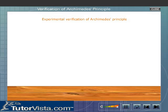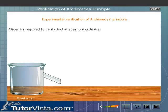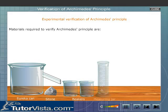Experimental verification of Archimedes' principle. The materials required to verify Archimedes' principle are a Eureka can, stone, beakers, measuring jar, and a spring balance.